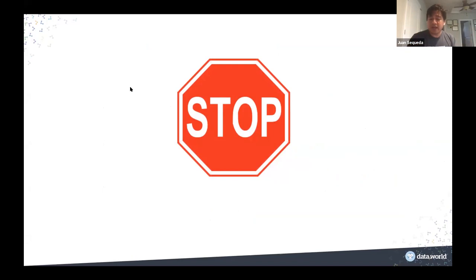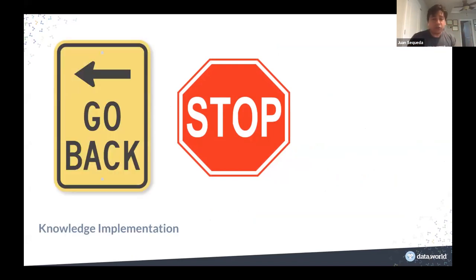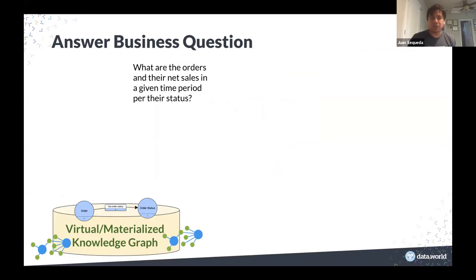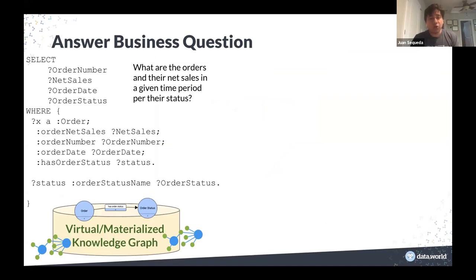At this point you start generating data, you can validate it, and see if things look good. If there are issues you can go back and figure out where things went wrong in the implementation phase. If things pass quality checks, you can go into self-service analytics and answer your business question. For example: what are the orders and their net sales in a given time period per their status? You can write a query in terms of that target ontology — give me everything that is an order, return the net sales, order number, date, and status — and execute it over your knowledge graph, whether virtual or materialized.